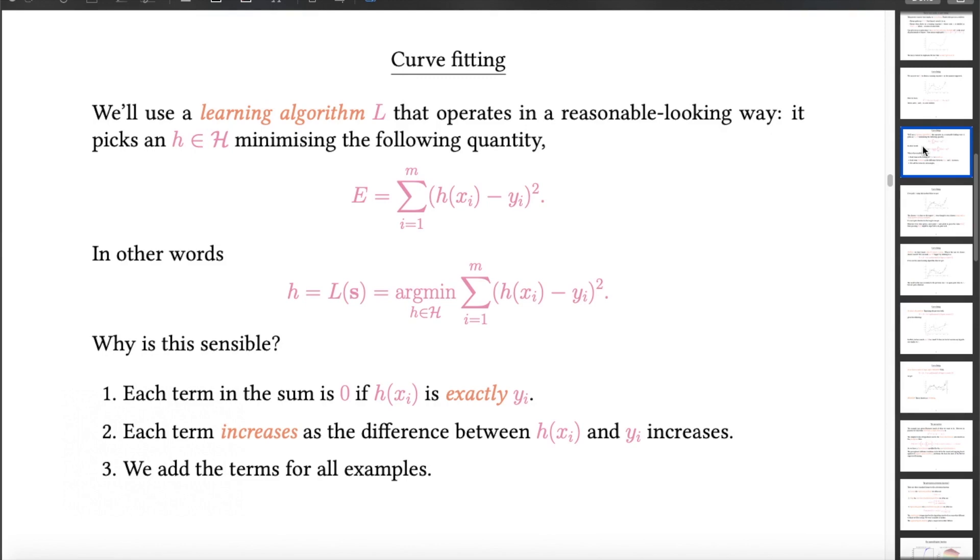I'm hoping that that seems a reasonable thing to do, because if each term in that sum is zero, then my h is predicting exactly the correct values for the y values in the training set. But also, each term in that summation increases as the difference between the prediction of my function h and the actual value y increases. And we're just adding up the terms for all the examples. So if big E is zero, then my h, the one that I'm using, predicts the labels in the training example exactly. And as it predicts them less well, the value of e increases. And I'm proposing that I choose the h that minimizes e. And that's my learning algorithm.